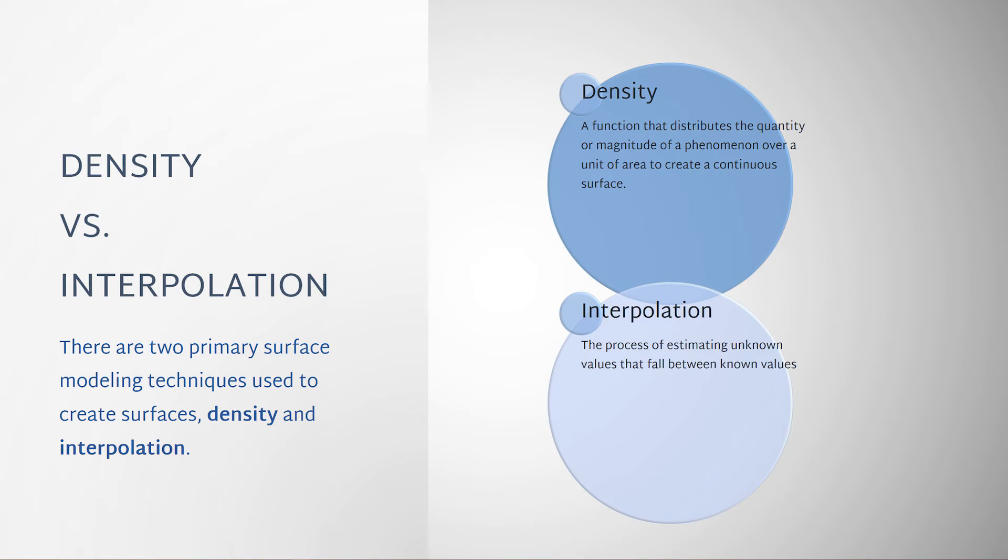Density does not try to predict actual values at specific locations. Instead, it measures the frequency or likelihood of a value over an area. For example, a density surface modeling crime does not represent actual crimes occurring at each location, but only the frequency of crimes.